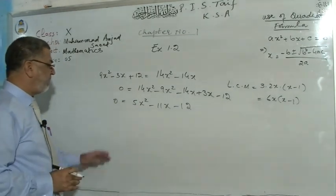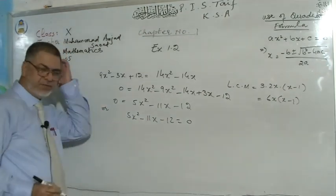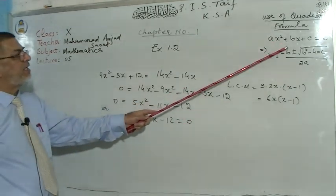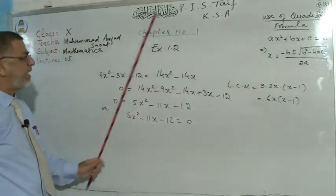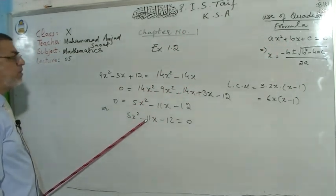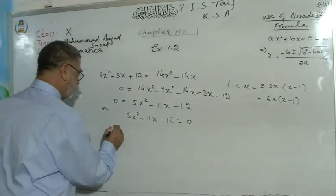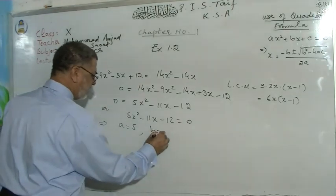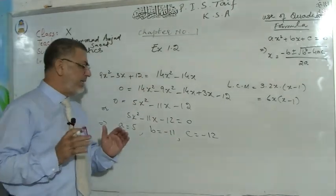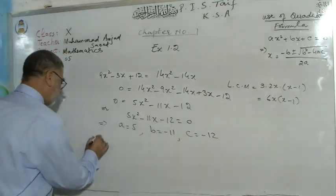We have 5x² − 11x − 12 = 0. Now compare this with the standard quadratic equation ax² + bx + c = 0. The coefficient of x² is a = 5, the coefficient of x is b = −11, and the constant is c = −12. Always remember: coefficient of x² is a, coefficient of x is b, and constant is c.